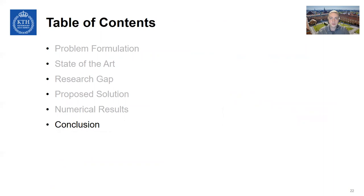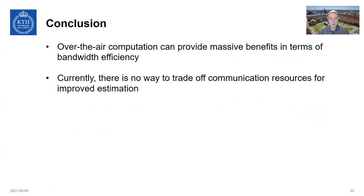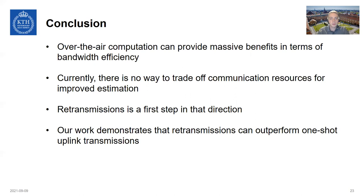With those numerical results presented, I move on to give a conclusion. So as we saw in the background, over-the-air computation can provide massive benefits in terms of bandwidth efficiency, up to being proportional to the number of transmitting devices in the network. However, for over-the-air computation, there's currently no way to trade off communication resources for improved estimation. So there is kind of this error floor that cannot be pierced with the current state of the art. And as a first step in that direction, we have proposed this retransmission scheme. And both our analytical and numerical results demonstrate that such a scheme can outperform one shot uplink transmissions, both in terms of classification accuracy and in terms of energy efficiency.